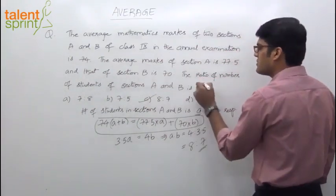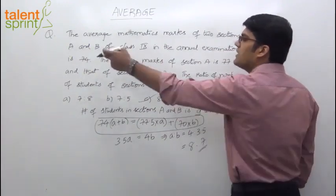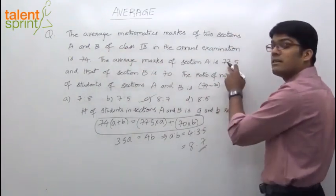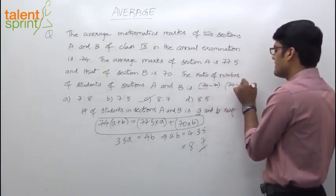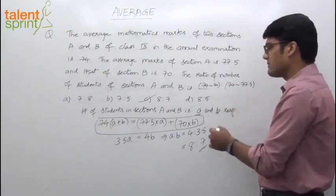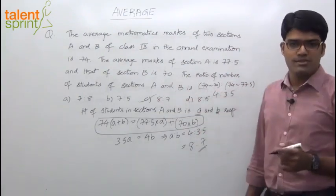So for A, you should take average difference, average of B. 74 difference, 70. And for B, you should take overall average difference with average of A. So this is 74 difference, 77.5. That will give you an answer. 4 is to 3.5, simplified further as 8 is to 7, option C.